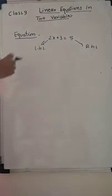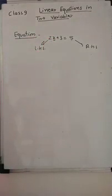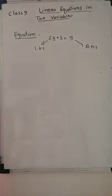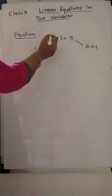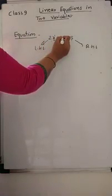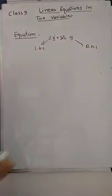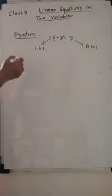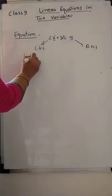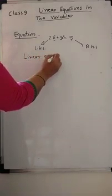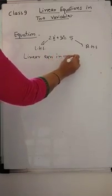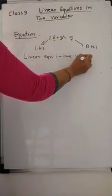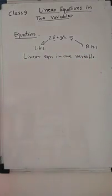Now you can see here that there is only one variable, so it is an equation in one variable. And the highest power of the variable is 1, because the power of x is 1. So it is a Linear Equation — a Linear Equation in one variable. This is the example of a Linear Equation in one variable.